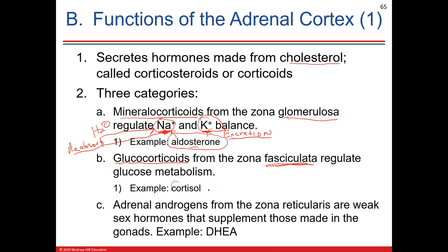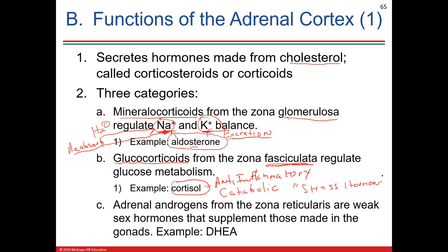A good example of a glucocorticoid is cortisol or cortisone — steroids. Cortisol is an anti-inflammatory and decreases the immune system. It's also catabolic when it comes to proteins and glycogen. Sometimes called the stress hormone, which is appropriate when you're under stress, but you can't have it released constantly. It will lower your immune system, break down your glycogen, and increase your blood sugar — which is not good for long-term health, though initially appropriate.